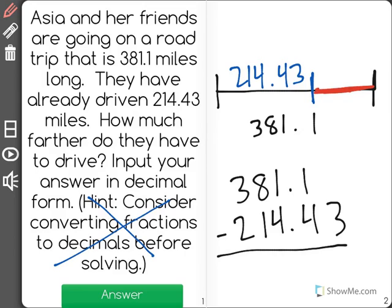Now notice when I subtract I make sure that all my place values match. And the way I do that is I put one decimal point directly on top of the other and line up the rest of the numbers. Now you can see we have no digit over here to the right of one, meaning that it has no value. So we'll assume that it's zero because it has no value.